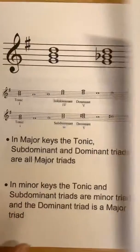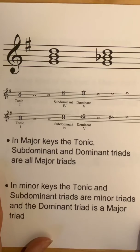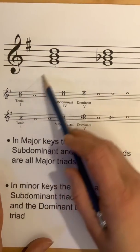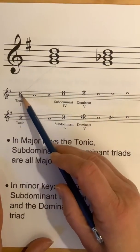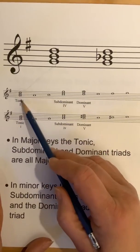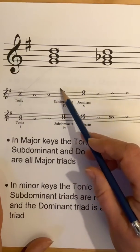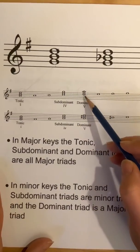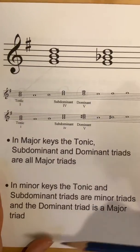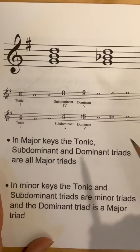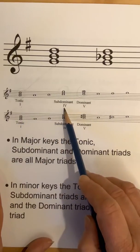In major keys, the tonic, subdominant, and dominant triads are all major triads — really important to note this. Here we are in G major. This is our tonic triad: G, B, D — that's a major triad. Anytime you write a triad on the tonic note of any major key, it will be a major triad. Anytime you create a subdominant triad in a major key, it will be a major triad. Same with the dominant. This is really important for work in cadences and functional chord symbols. In major keys: tonic triads are always major, subdominants are always major, dominants are always major.